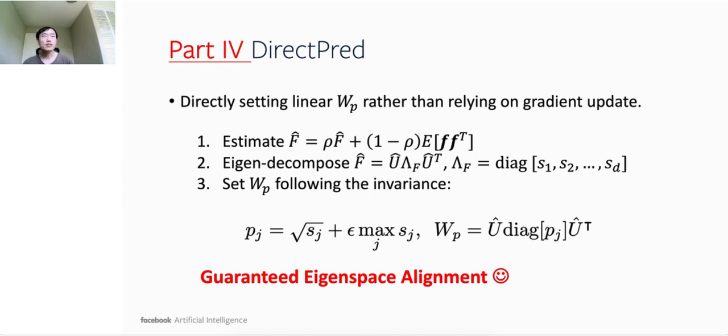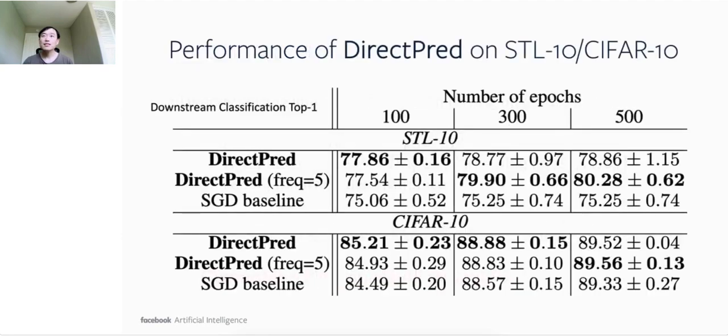Then the question is, does this approach work in practice? The answer is yes. The newly proposed DirectPredict does a great job on both STL-10 and CIFAR-10, showing stronger performance than SGD baselines which update W_P using gradient descent after 100, 300 and 500 epochs of training. Furthermore, if we directly set the linear predictor every 5 mini-batches and update them with gradient update in between, the performance is a little bit better. For this experiment, we use ResNet-18 as the non-linear network in the training step.